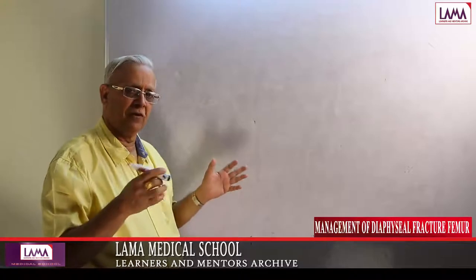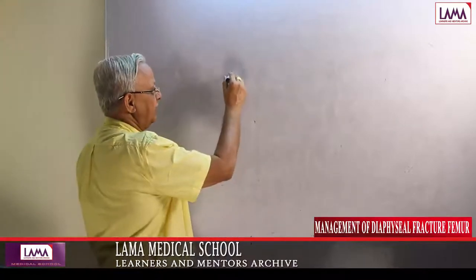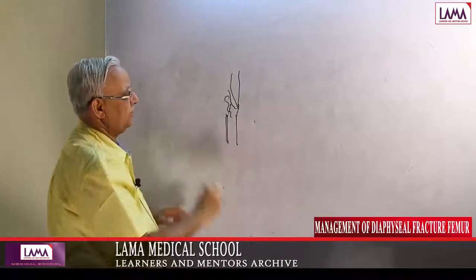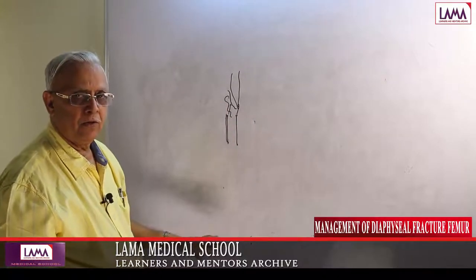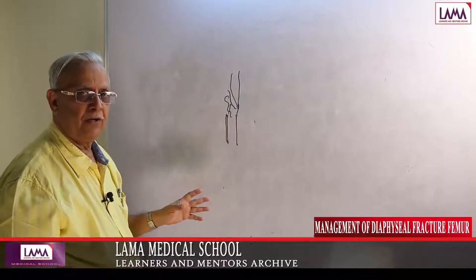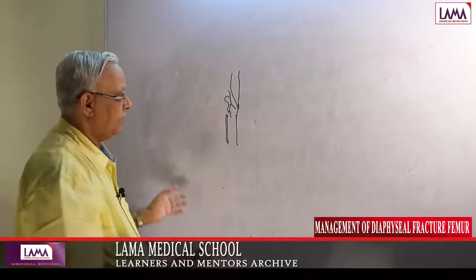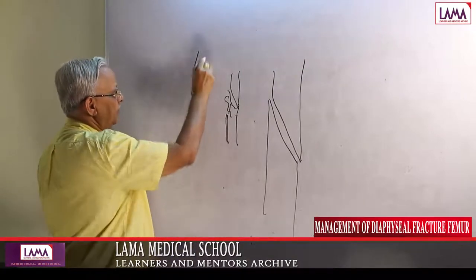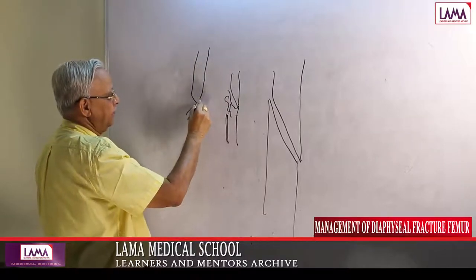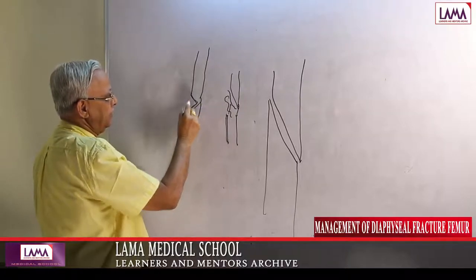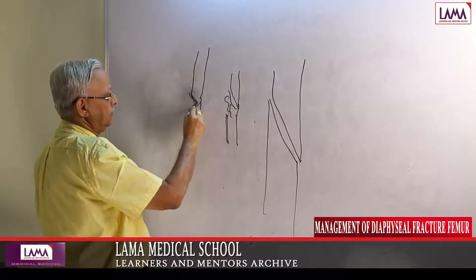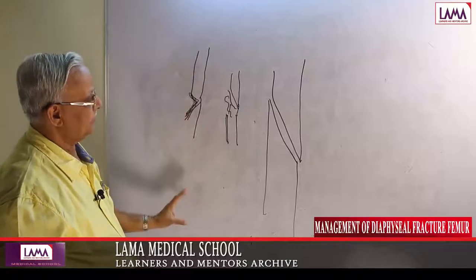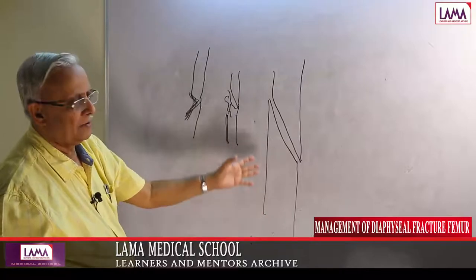If there is a direct injury, there may be more than one fragment — multiple fragments can result. There can also be a butterfly fragment: a separate fragment that must be fixed into position first before you get continuity. The number of fragments, the fracture line pattern, and the nature of the bone all determine treatment planning.